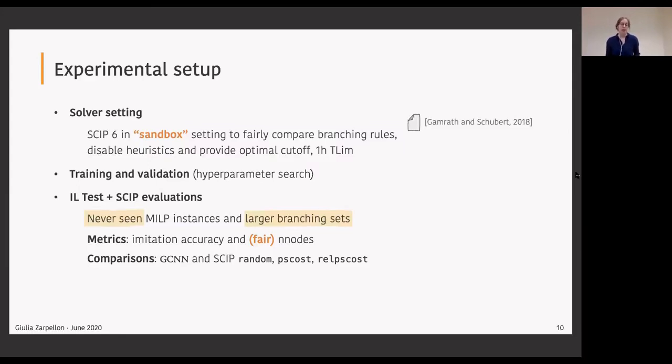To compare our policies we benchmark against GCNN, which is the state of the art in learning to branch literature. It's a method that specifically exploits the constraint structure of the A matrix to imitate strong branching and to specialize to different classes of problem. On the SCIP side, we run random, pseudocost, and the default, the expert we imitate, relpscost.